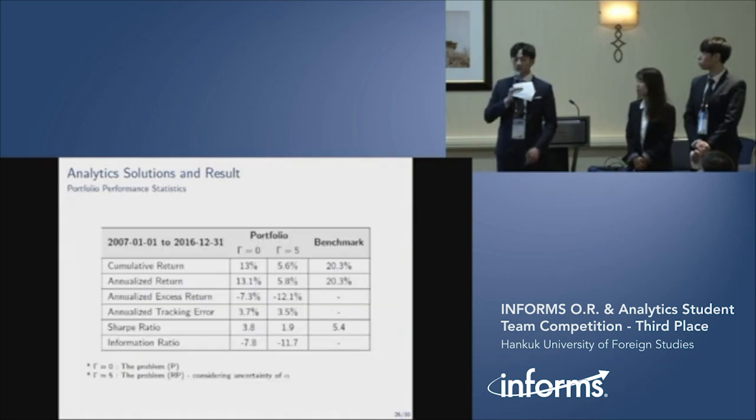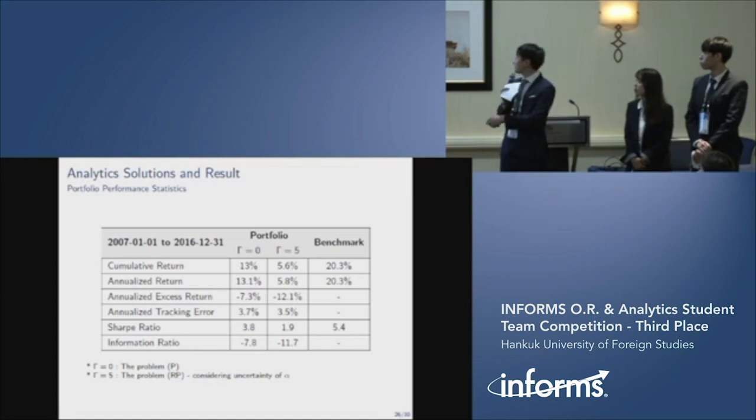These are the results of whole data. The left one is the result of experiments that does not consider uncertainty at all. The other one is the result which considers uncertainty as 10% of asset. Although the results with worst case are worse, considering uncertainty may be less sensitive to the severe fluctuation in the stock market.